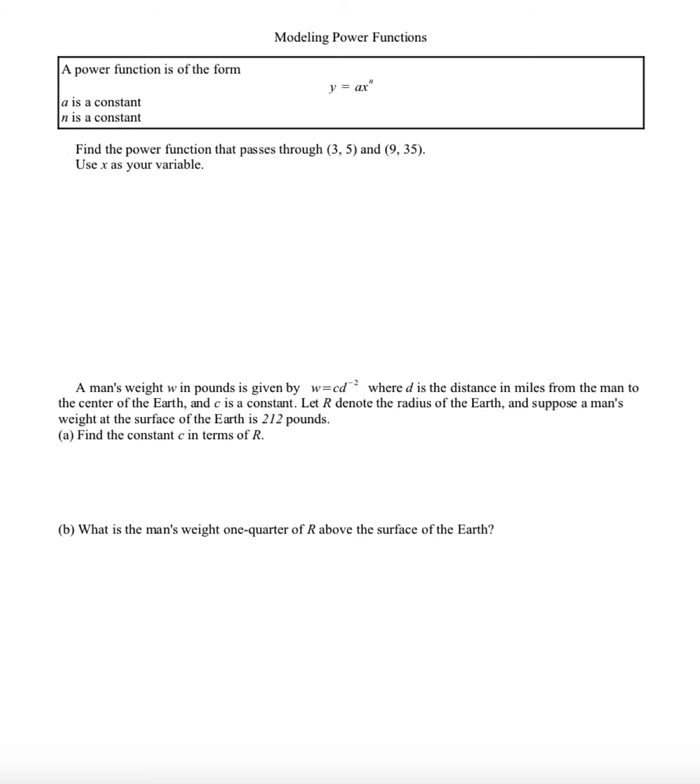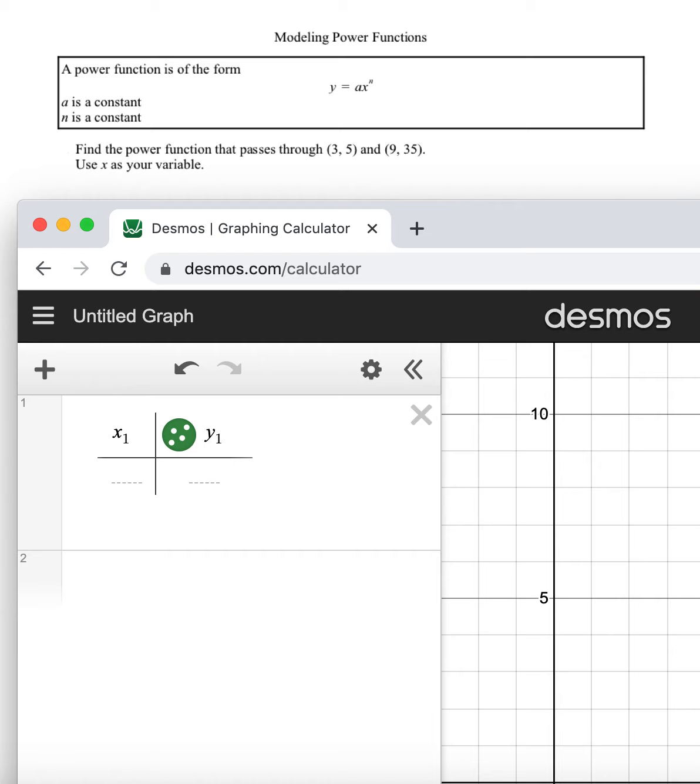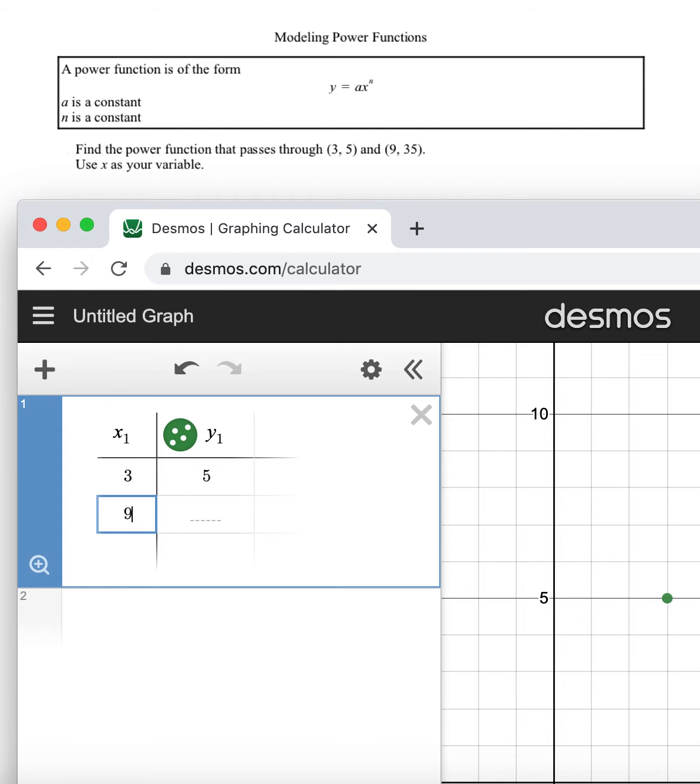First let's do the desmos way of finding it because that's easier. All I have to do is type in my points: 3,5 and 9,35.